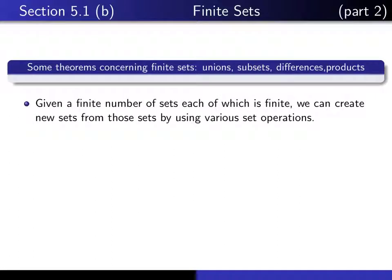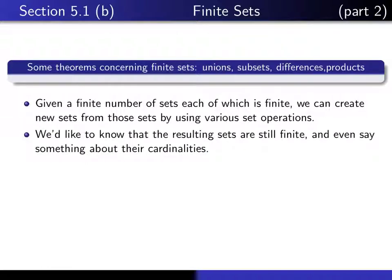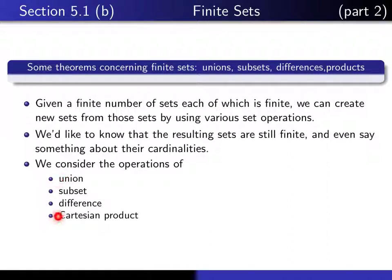If you give yourself a finite number of sets, each of which is finite, you can create new sets by using these various set operations. The kind of thing you'd like to know is: if you start with finite sets and do some of these operations, do you still get finite sets, and what can you say about their cardinalities?